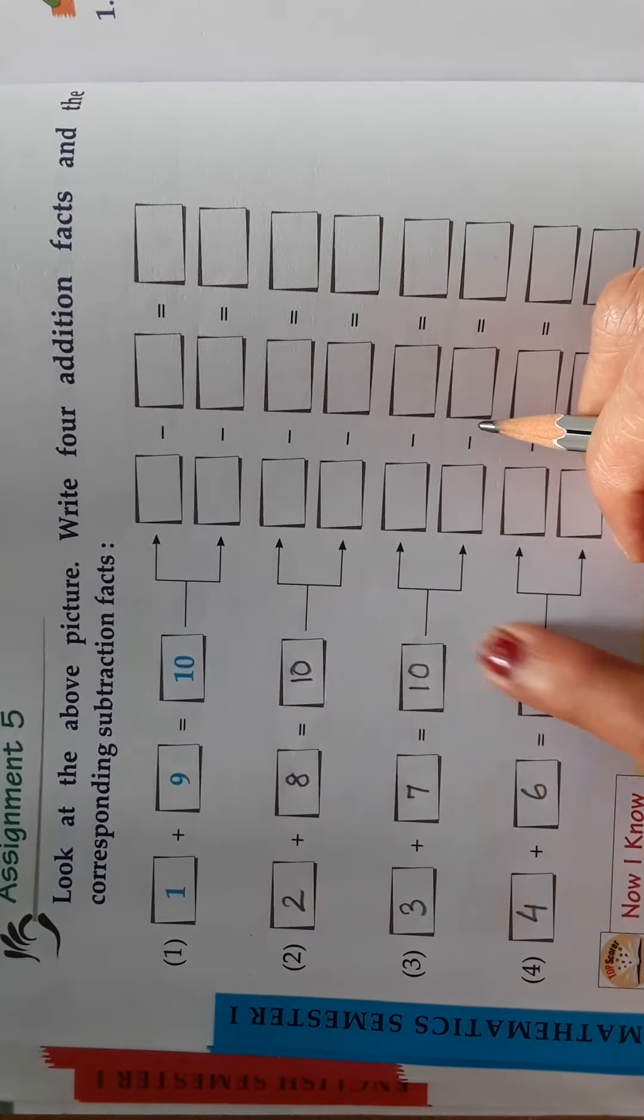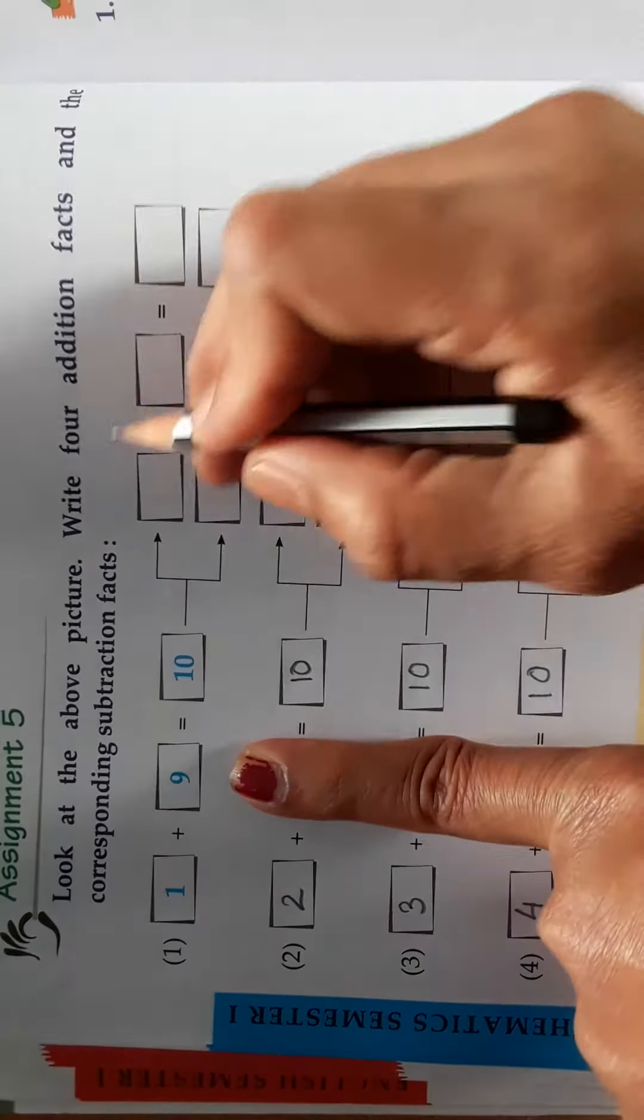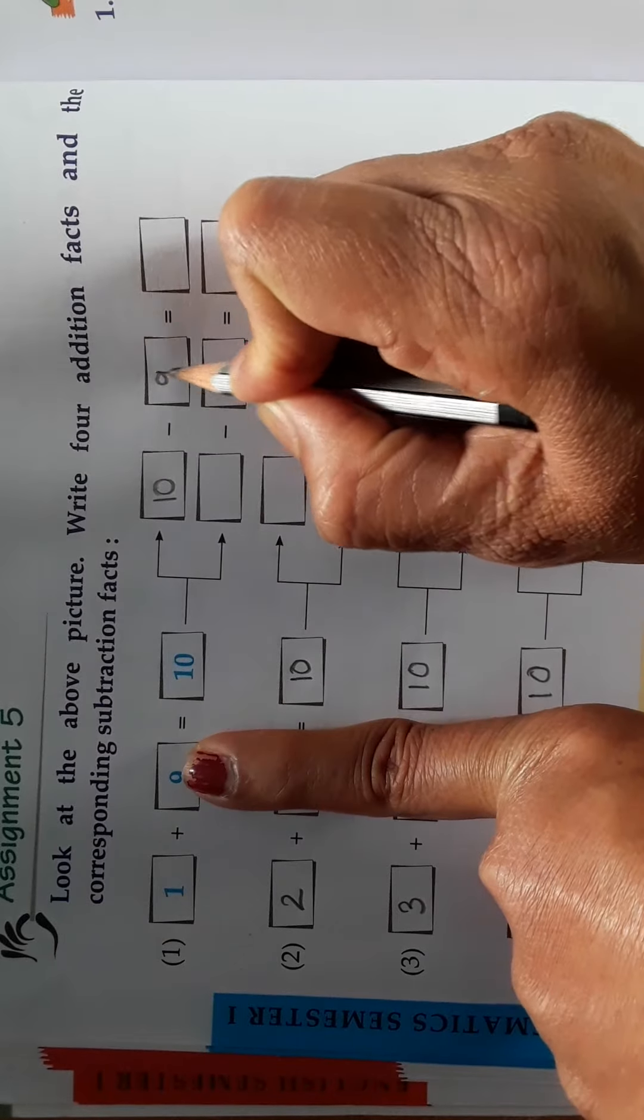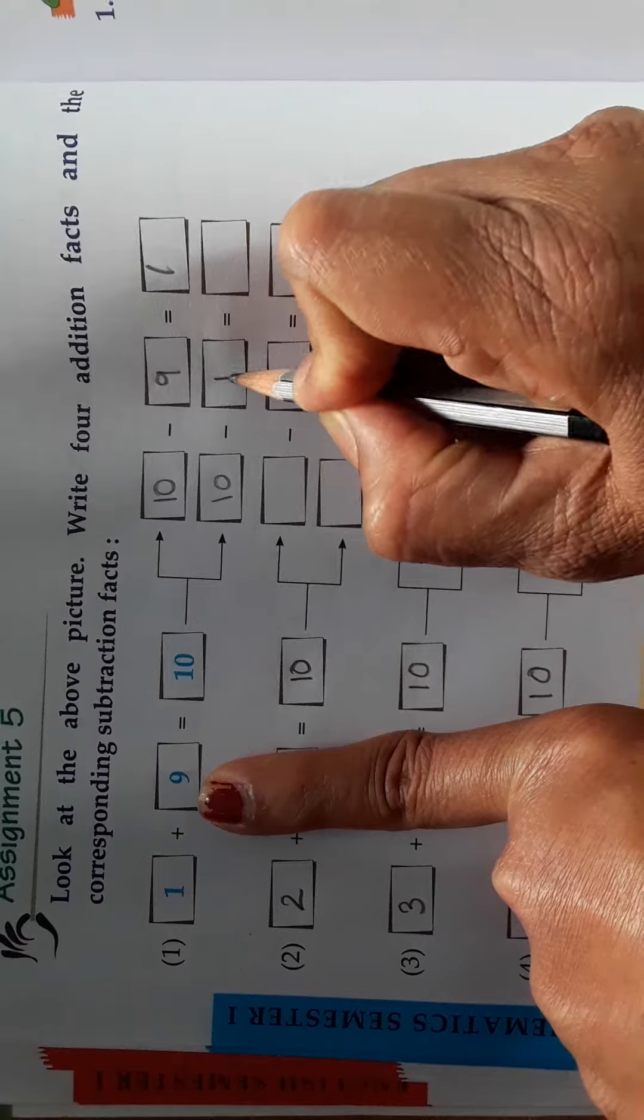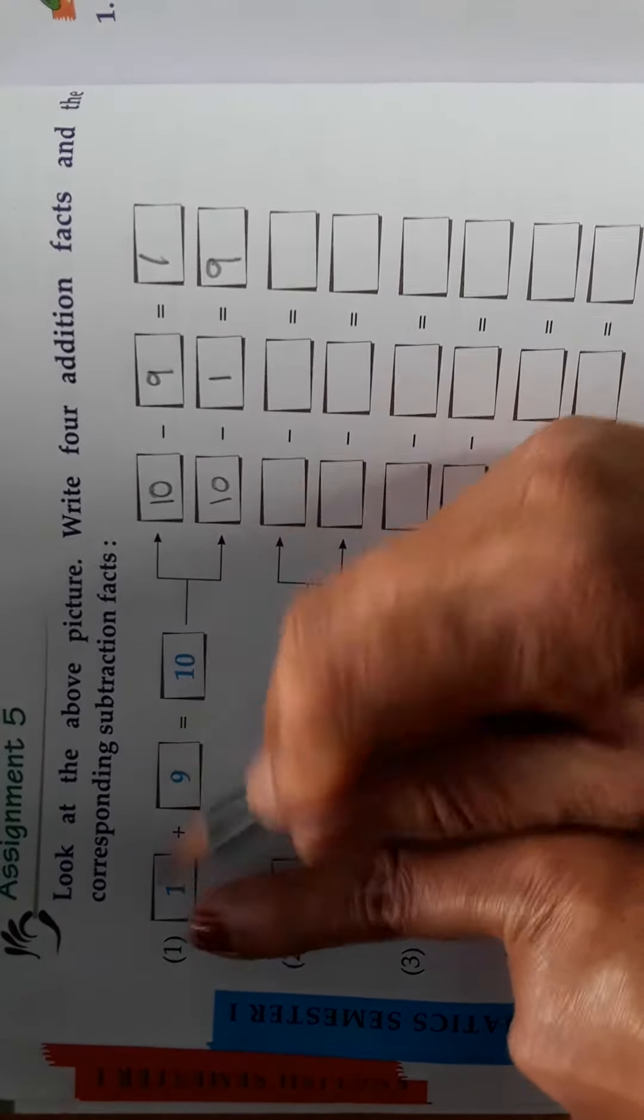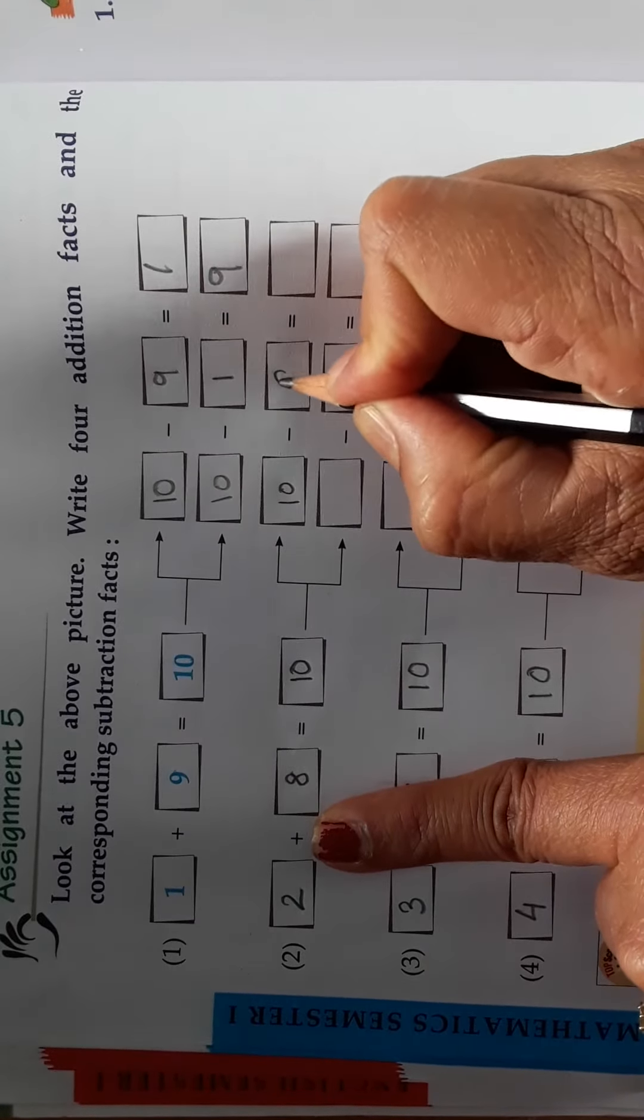This is how we are going to make 10. From this, we will make the subtraction fact. As I told before, 10 minus 9 will give you 1. Understood? So this one will give you the other number. 10 minus 8 will